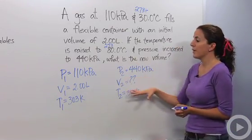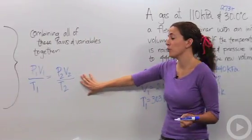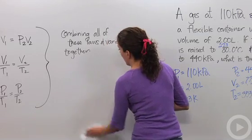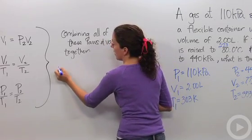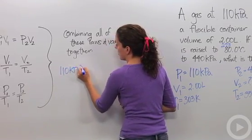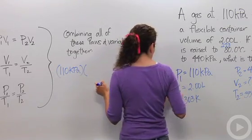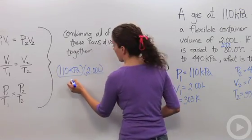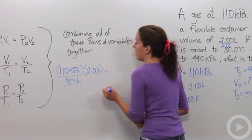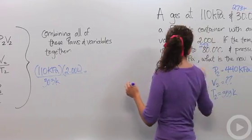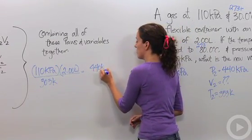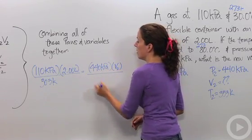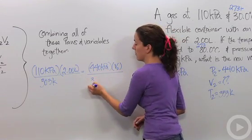Okay, so let's basically plug all these variables into our combined gas law to figure out what the new volume would be. Okay, so I'm going to erase this and say our pressure 1 is 110 kilopascals. Our volume 1 is 2 liters. Our temperature 1 is 303 Kelvin. Our pressure 2 is 440 kilopascals. We don't know our volume, so we're going to just say V2 over 353 Kelvin.